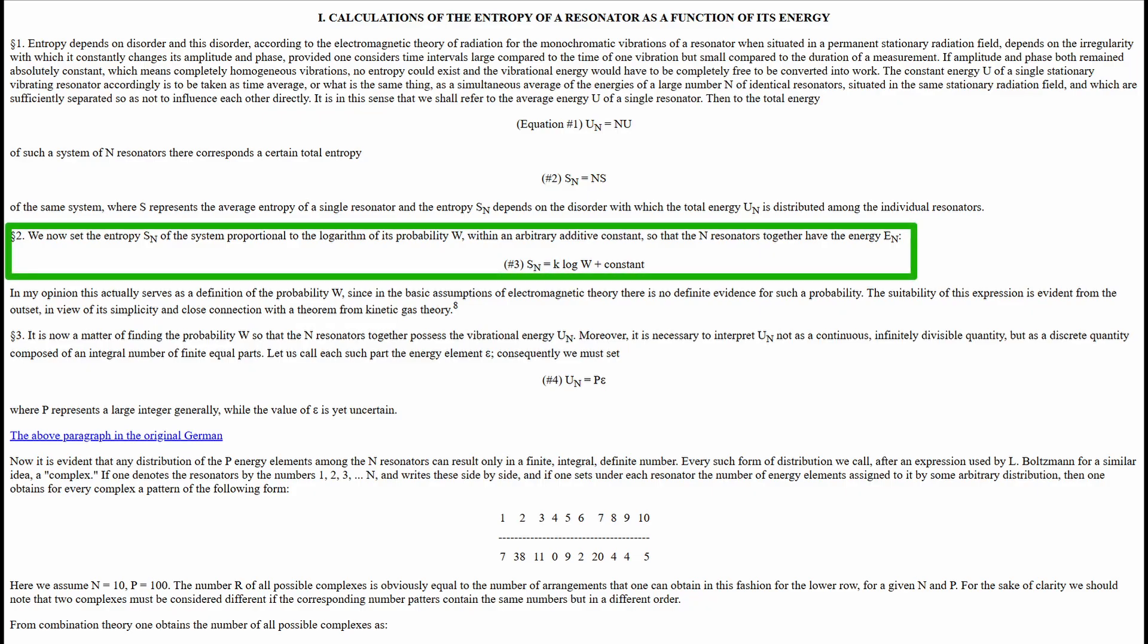We now set the entropy, S sub n, of the system proportional to the logarithm of its probability w, within an arbitrary additive constant, so that the n resonators together have the energy E sub n.